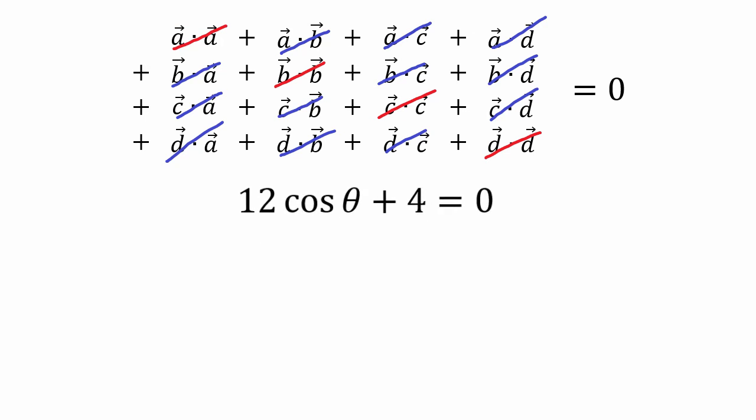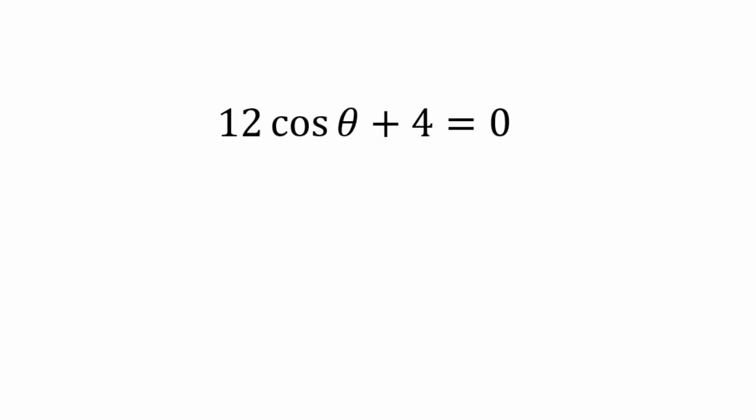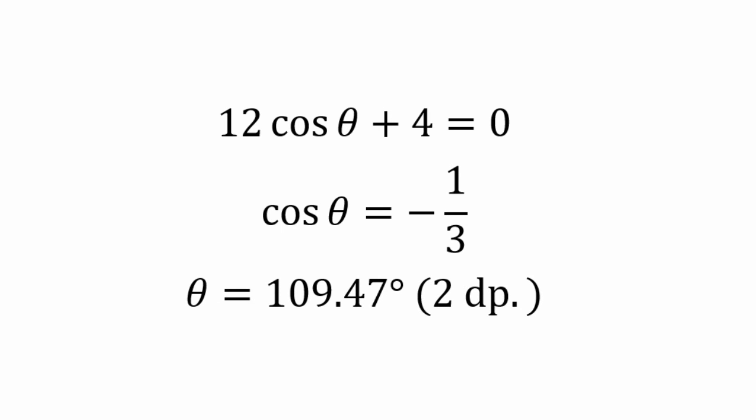Rearranging: move 4 to the other side and divide both sides by 12, giving cosine theta equals negative one-third. Therefore theta equals the inverse cosine of negative one-third, which is 109.5 degrees. That's all three methods proving that the bond angle of methane is 109.5 degrees.